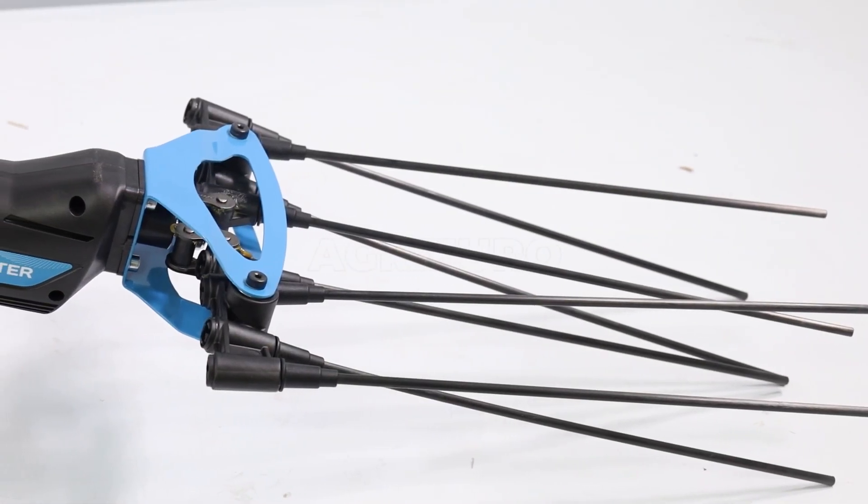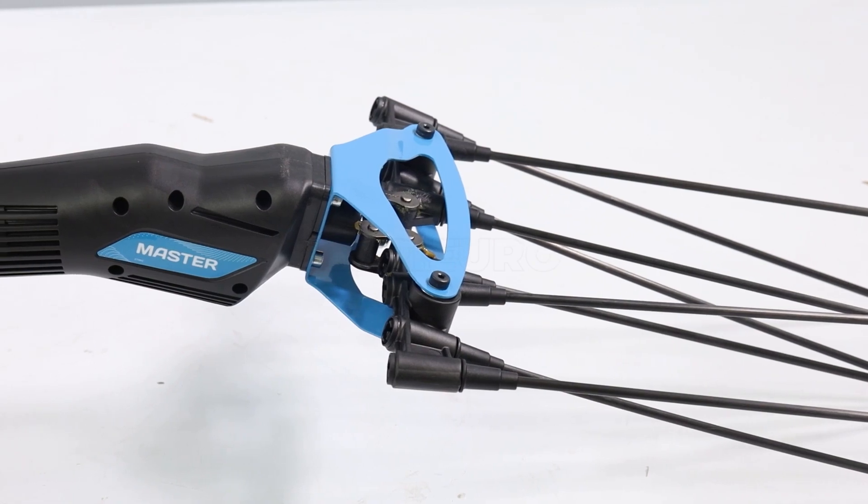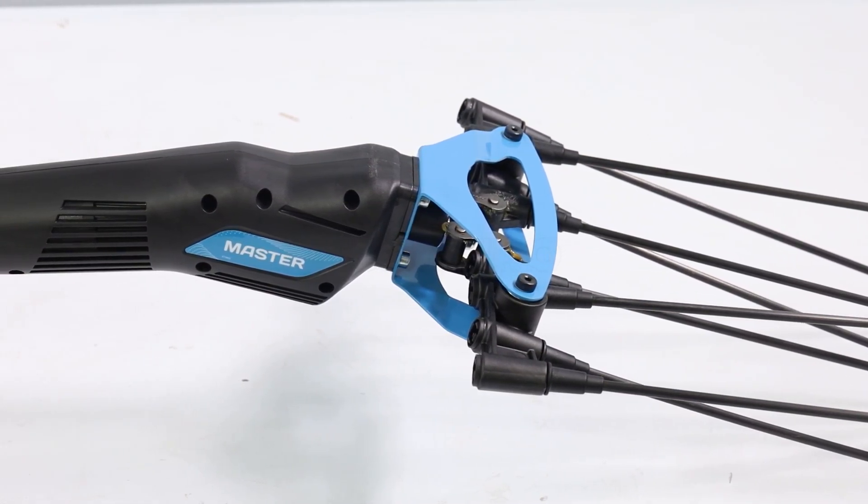With eight carbon rods, each 32 centimeters long, this harvester treats plants delicately during the olive harvesting operation.